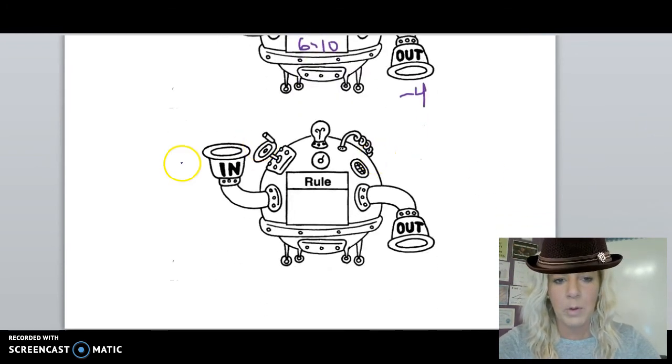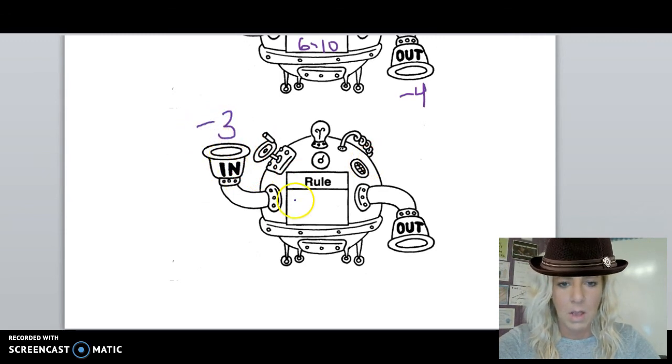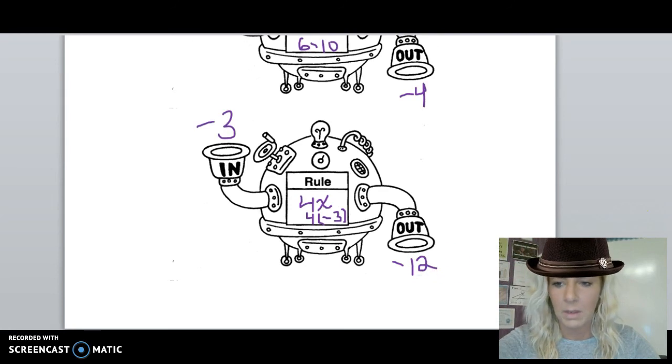Let's do one more example. Let's put in negative 3. Our function rule is 4x. Again, when your number and variable are next to each other, it's multiplication. So in this case, it's 4. I'm going to use parentheses to separate my terms times negative 3, which gives me an output of negative 12.